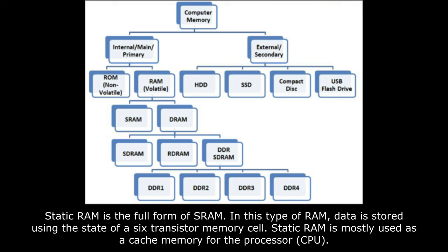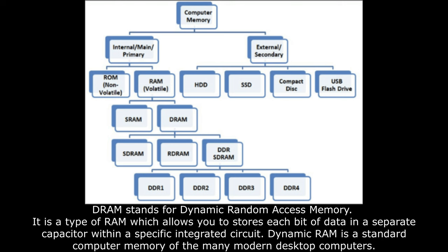Static RAM is the full form of SRAM. In this type of RAM, data is stored using the state of a 6-transistor memory cell. Static RAM is mostly used as cache memory for the processor. DRAM stands for Dynamic Random Access Memory. It's a type of RAM which allows you to store each bit of data in a separate capacitor within a specific integrated circuit. Dynamic RAM is the standard computer memory of many modern desktop computers.